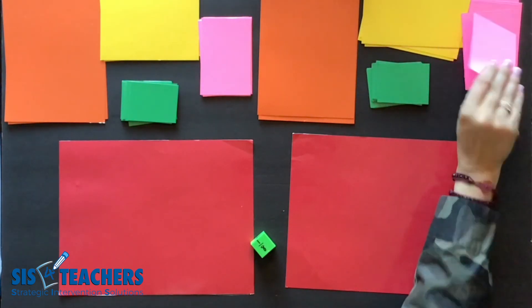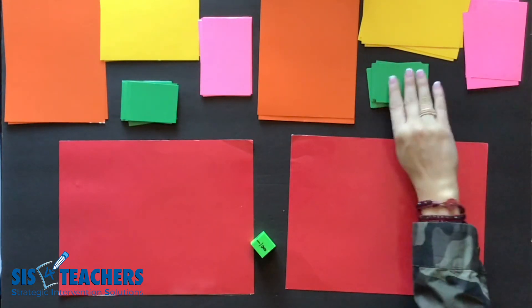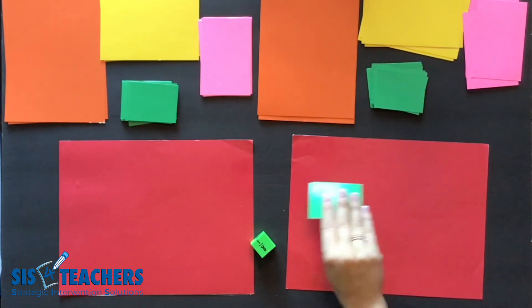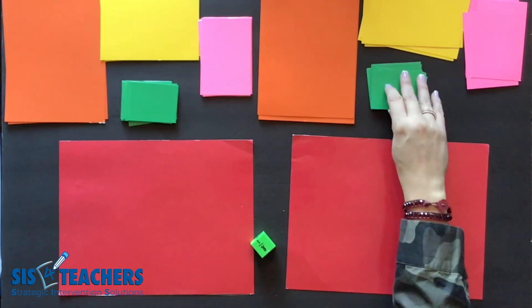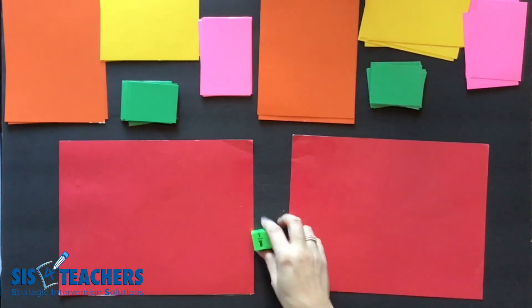In this case we know that our yellow is worth one fourth, our pink is going to be worth one eighth, and then our small greens here are going to be worth one sixteenth. So we know we have these certain unit fractions.